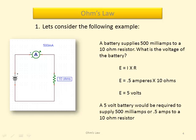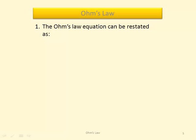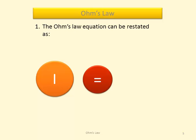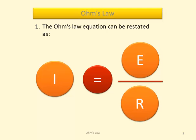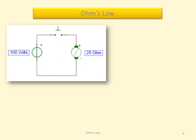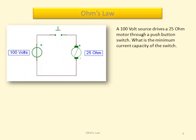The Ohm's Law equation can be restated as current equals voltage divided by resistance. Let's consider the following example. A 100 volt source drives a 25 ohm motor through a push button. What is the minimum current capacity of the switch?